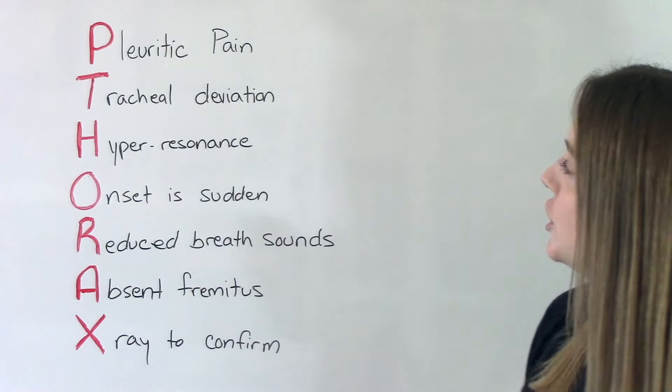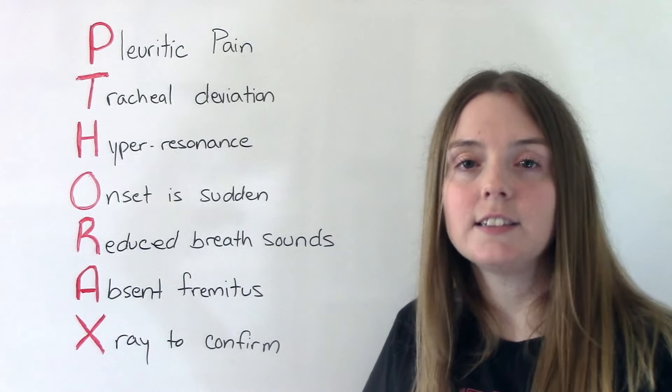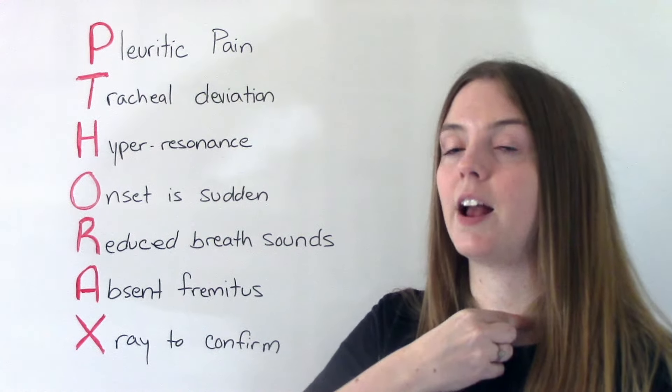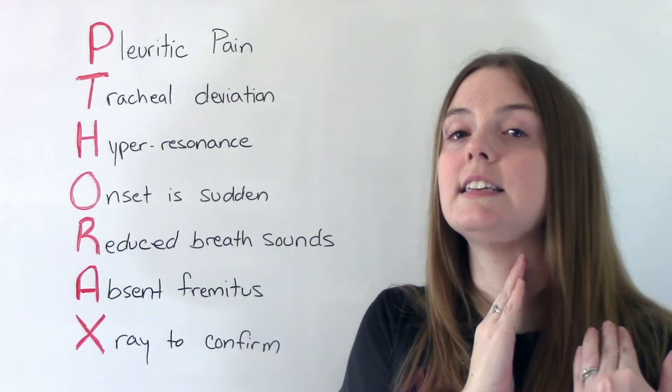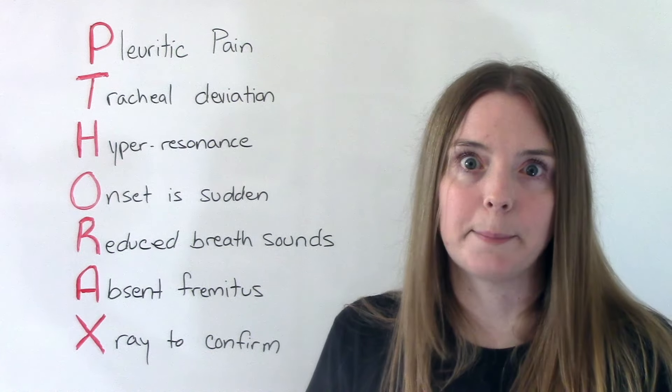T is for tracheal deviation. Because of the pressure changes in the chest, it's going to cause our trachea, which is supposed to be midline, to deviate. It's going to shift to one side depending on which lung collapsed.